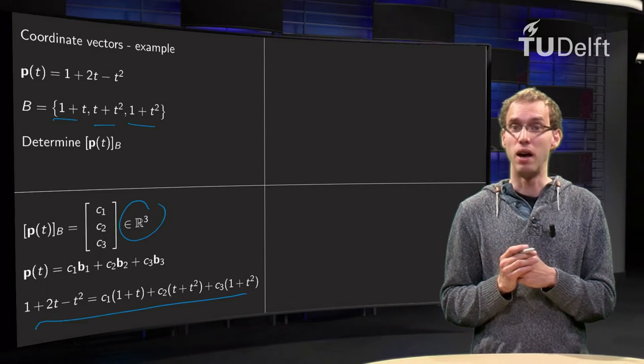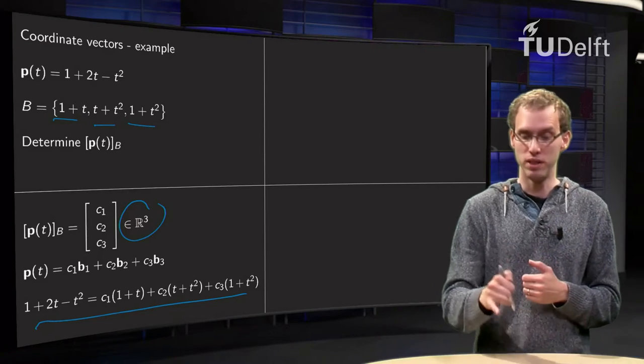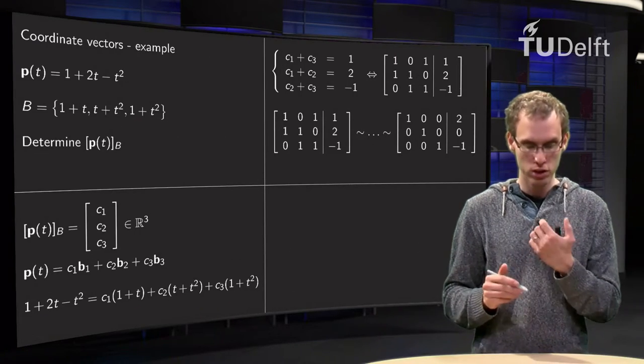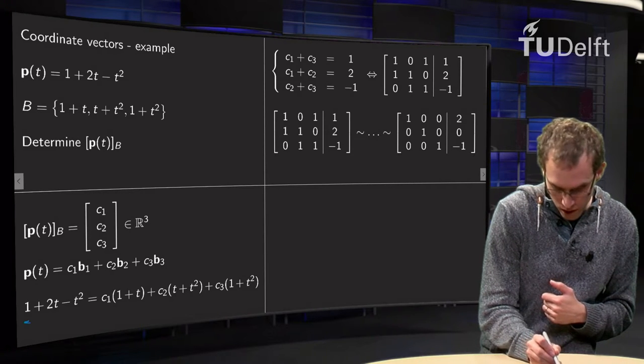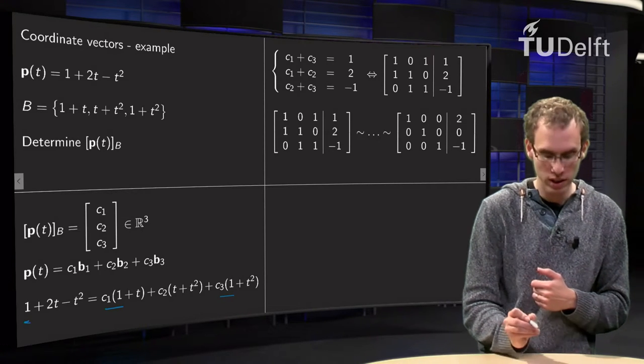And then we compare the powers of t. So what do we see? For t to the power of 0, 1 equals c1 plus c3. For t to the power of 1, 2 equals c1 plus c2.